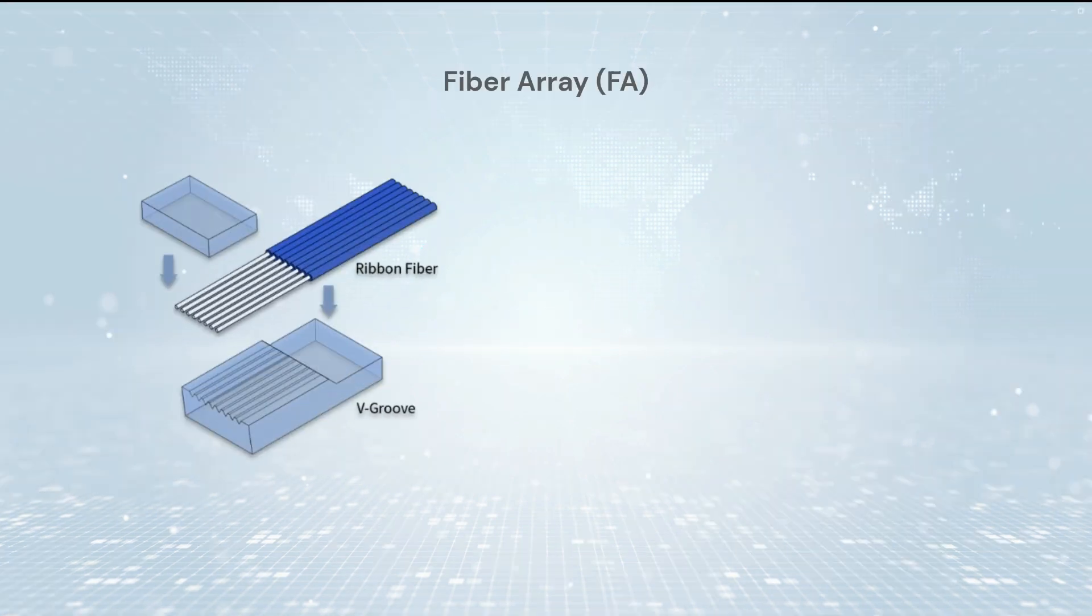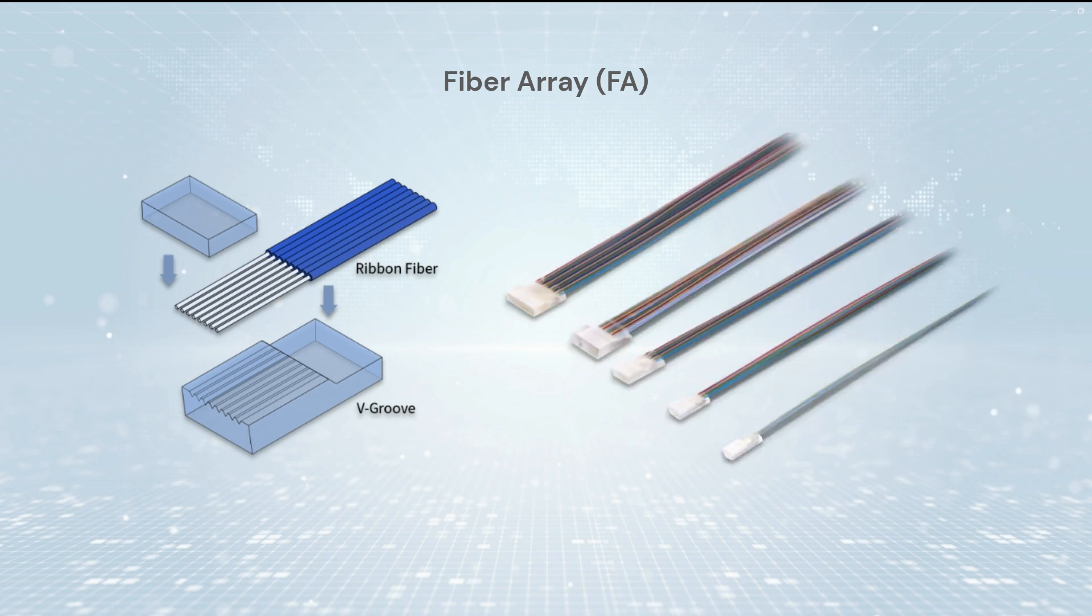Fiber Array, FA for short, is an array formed by installing a bundle of optical fibers or fiber ribbons on the substrate at specified intervals using a V-groove substrate.